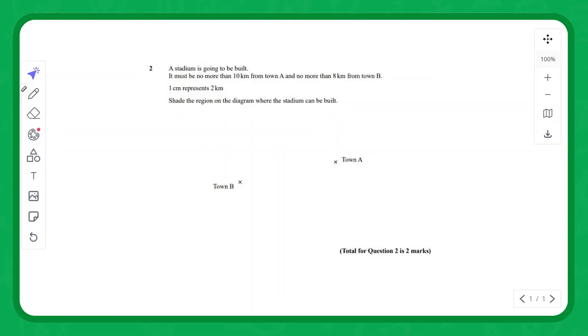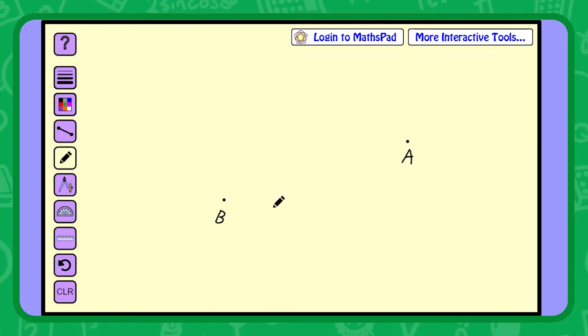Okay. In this question, a stadium is going to be built between town A and B. The stadium must be no more than 10 kilometers from town A and no more than eight kilometers from town B. And one centimeter represents two kilometers. We've got B and A. And we know that the stadium is going to be built somewhere in the region that is within 10 kilometers of A and within eight kilometers of B. So how do we do this? Well, going back to our mathspad.co.uk app again, we see here, if this is town A and this is town B...